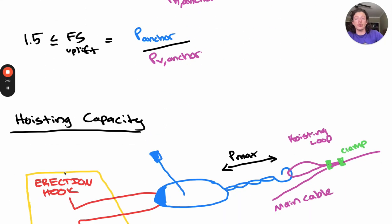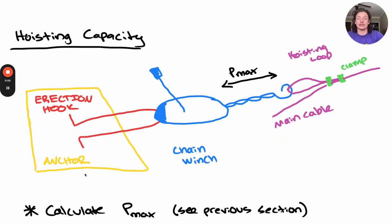Now in this final section, we're going to check out some hoisting-specific structures and their capacities. This will be the winch and the erection hook that we're most interested in. In order to do this, we will analyze the tension in a single cable. Remember, calculating Pmax for a single cable was part of our load-defining process.